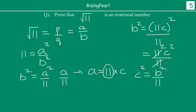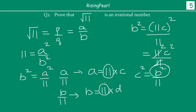So if b squared is divided by 11, that means b must be divisible by 11, which means 11 is a factor of b, and we can express b as 11 times some integer d. Between a and b, 11 is a common factor. But we know that a and b are co-prime numbers, so they do not have any common factor except 1. Here 11 is a common factor between a and b, which cannot be the case. So our assumption that square root 11 is a rational number is wrong. In the next video, we are going to look at how we can extend the theorem to prove some more irrational numbers.